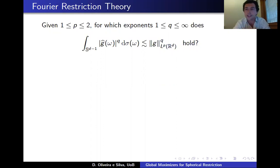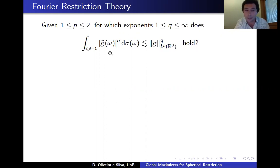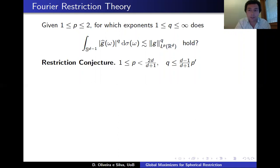The question is: what happens for intermediate values of p? Given an exponent p between 1 and 2, for which exponents q do we have an L^p to L^q restriction inequality? On the left-hand side we have integration with respect to surface measure sigma on the unit sphere. This is the restriction conjecture, formulated by Eli Stein in the late 1960s, which gives necessary and sufficient conditions on p and q depending on d for which this restriction inequality is expected to hold.